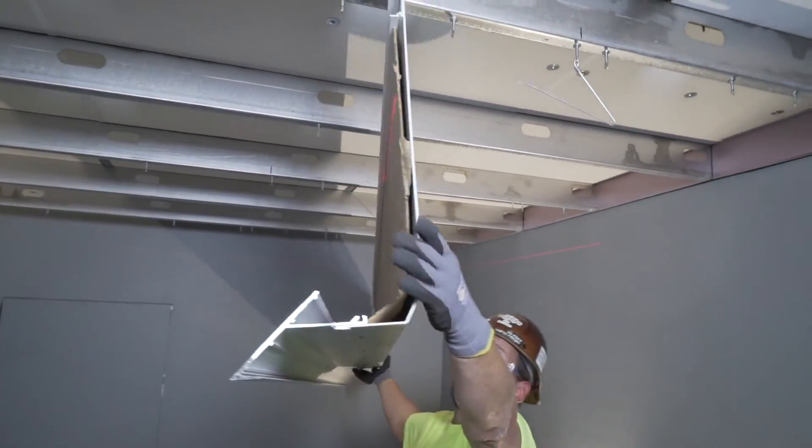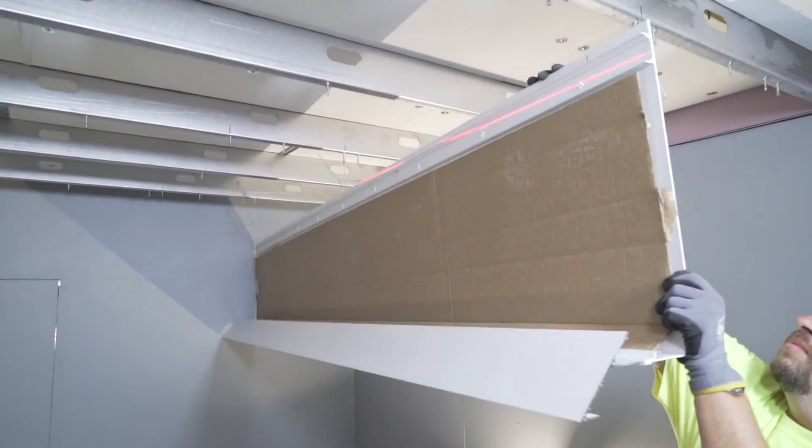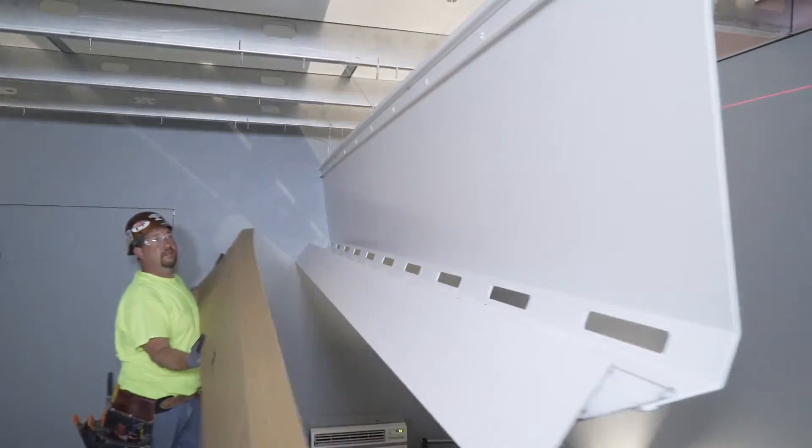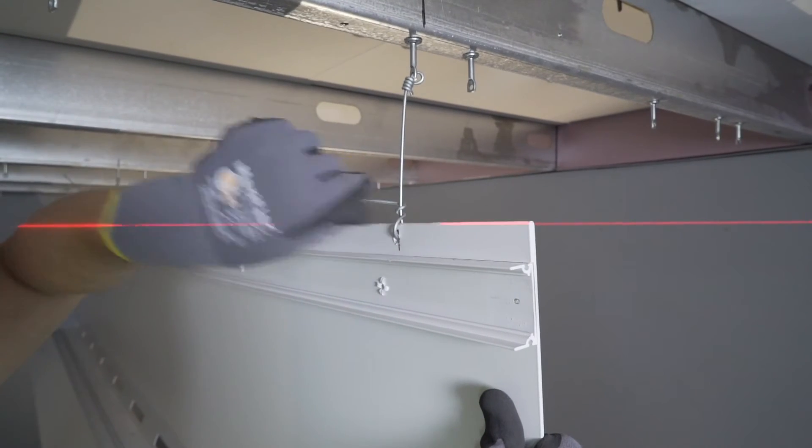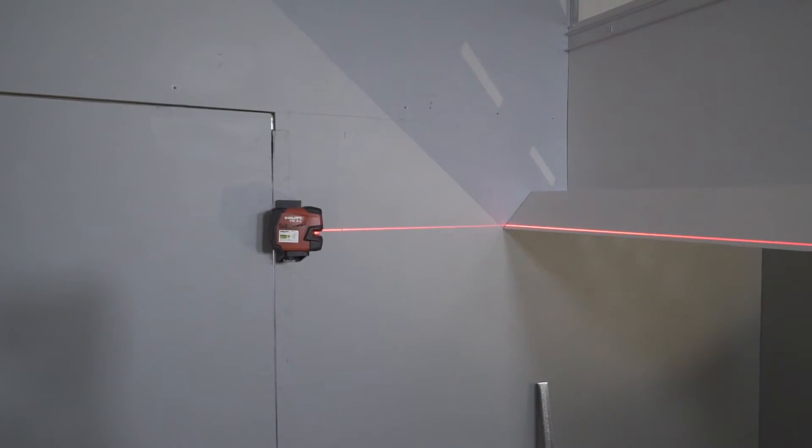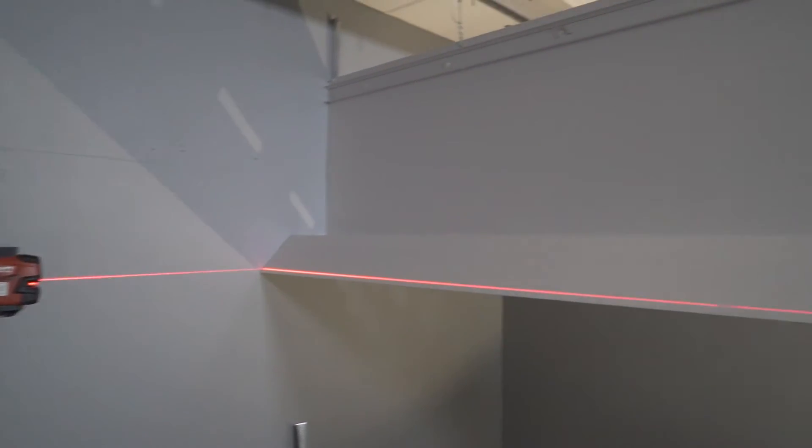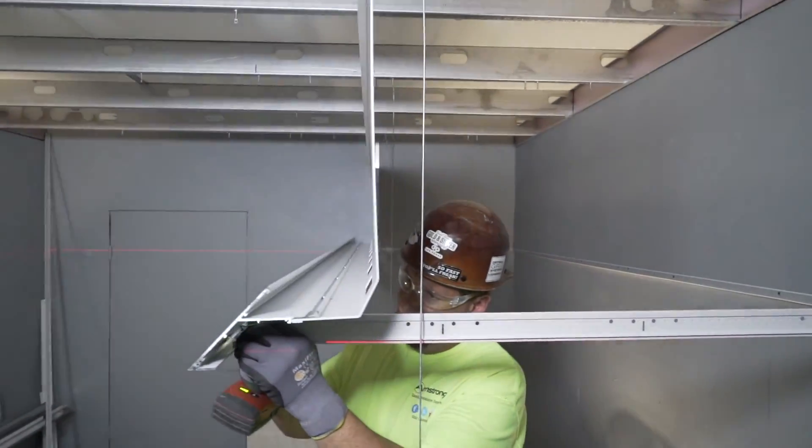Compare that with conventional stud and track coves that require separate framing, drywall, mud, sanding, and painting. From start to finish, conventional coves can take up to a month to complete. Even then, the final lighting performance of the cove is uncertain.